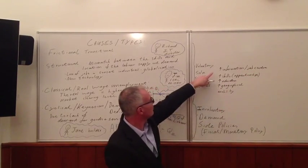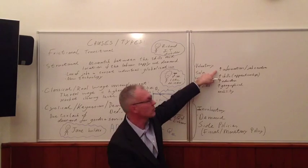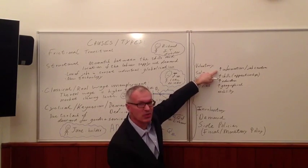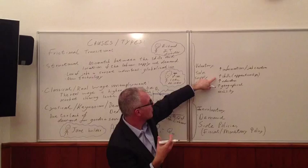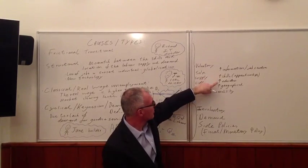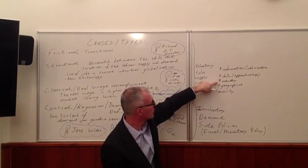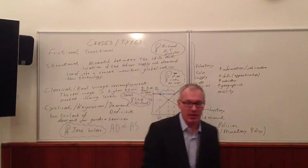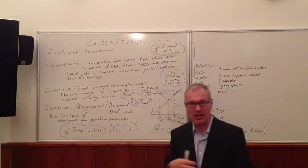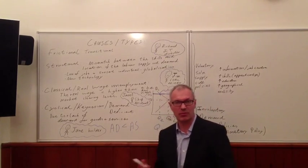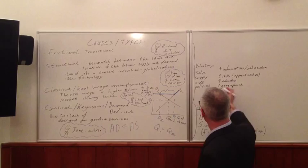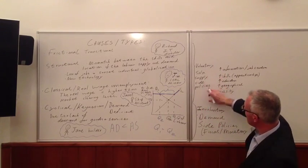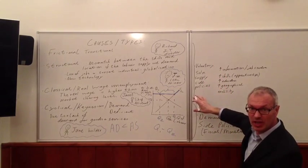We need policies such as increased information, increased use of IT, better job centres, better provision of skills, more apprenticeships, perhaps more education, policies to encourage greater geographical mobility of labour, such as it's easy to buy and sell property or rent property in different parts of the country. Those are all supply-side policies that operate on the labour market.